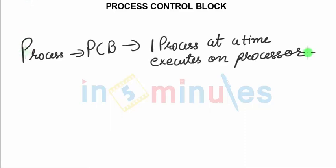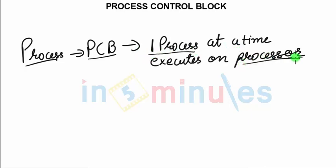As we go further, we have already said that each process carries a PCB, but we have also said that out of N available processes, only one process at a time will execute on the processor. This calls for the need of context switching.